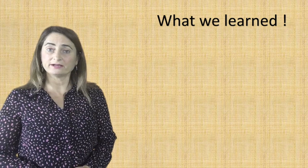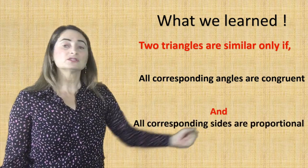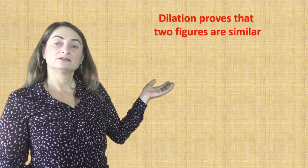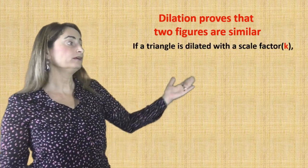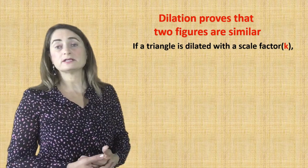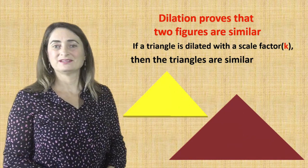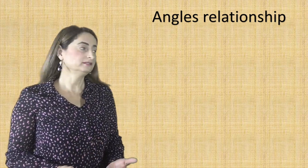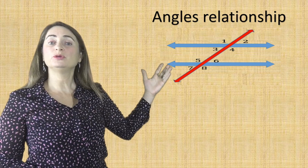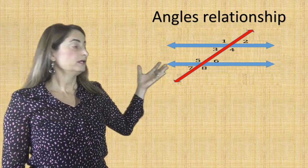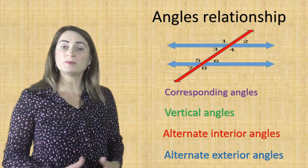We will build on what we learned about similar triangles. Two triangles are similar only if all corresponding angles are congruent and all corresponding sides are proportional. We also learned that dilation proves that two figures are similar, and that's one way of transformation. If a triangle is dilated with a scale factor — remember that's called k — then the triangles are similar. For example, here is the big triangle and a small triangle, whether the small got enlarged or the bigger got reduced using a scale factor. We also learned about angle relationships using two parallel lines cut by a transversal, where eight angles are created. We proved that some pairs of angles are congruent: corresponding angles, vertical angles, alternate interior angles, and alternate exterior angles.